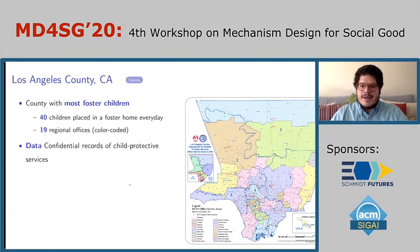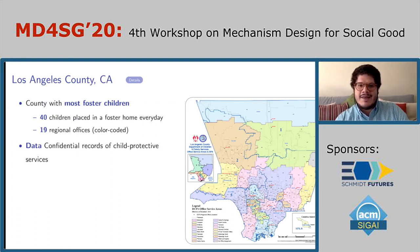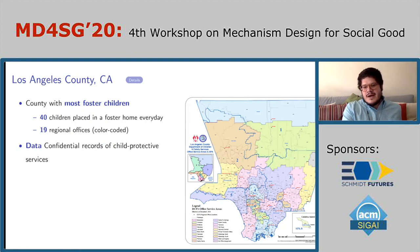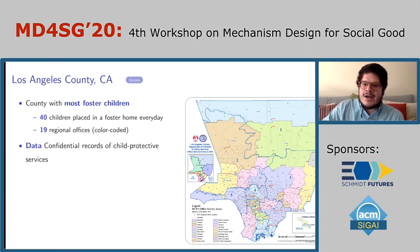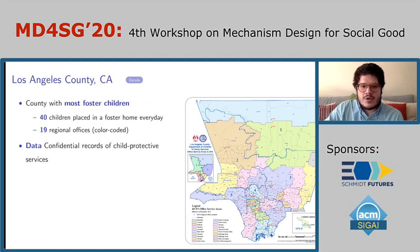In the US, the system is organized at the county level. Today I'm going to show data from Los Angeles County, which has the most foster children in the US. Because it's so large, the county is decentralized into 19 regions. Children enter the system every day, and on average 40 children are placed in a foster home across all 19 regional offices. The data comes directly from the confidential records of Child Protective Services in Los Angeles.